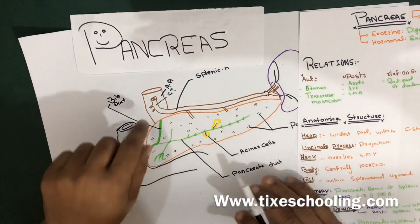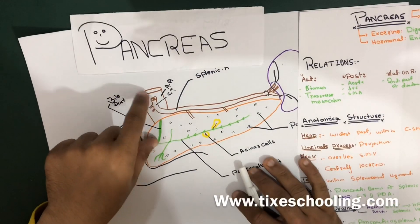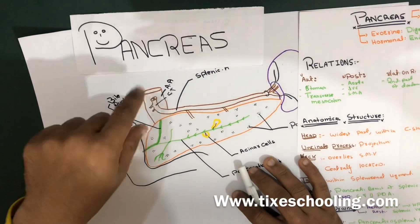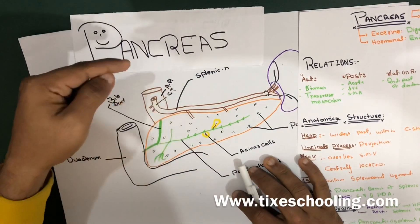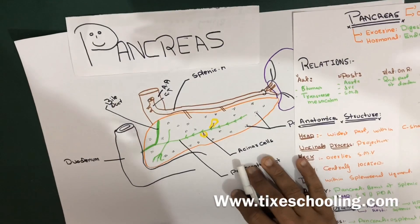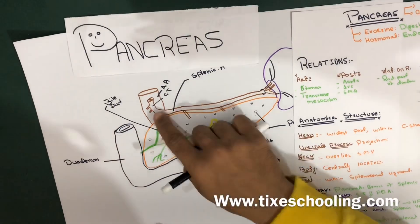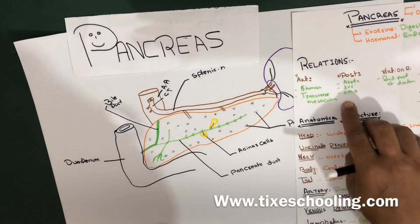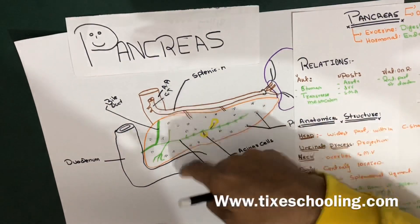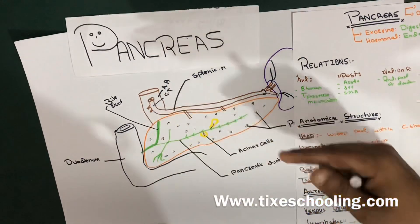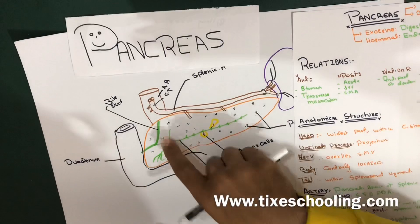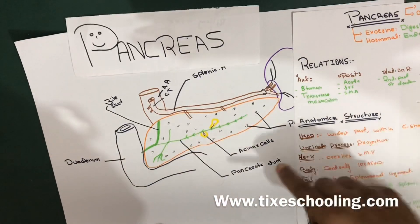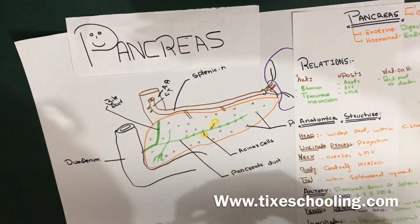Posteriorly, the main structures passing behind the pancreas are the aorta, the inferior vena cava, and the superior mesenteric artery, which also passes behind it.